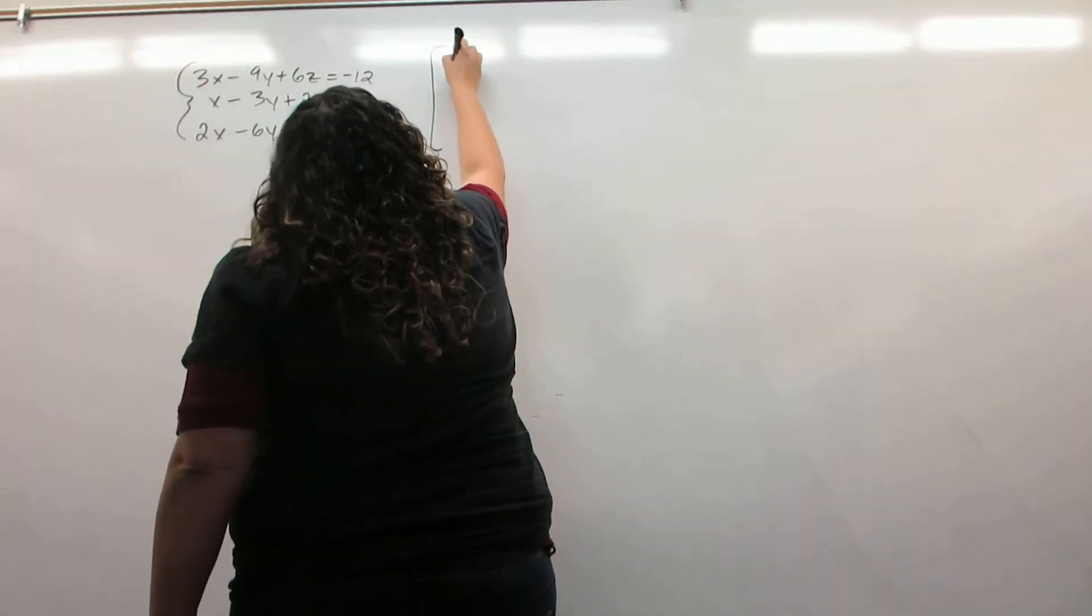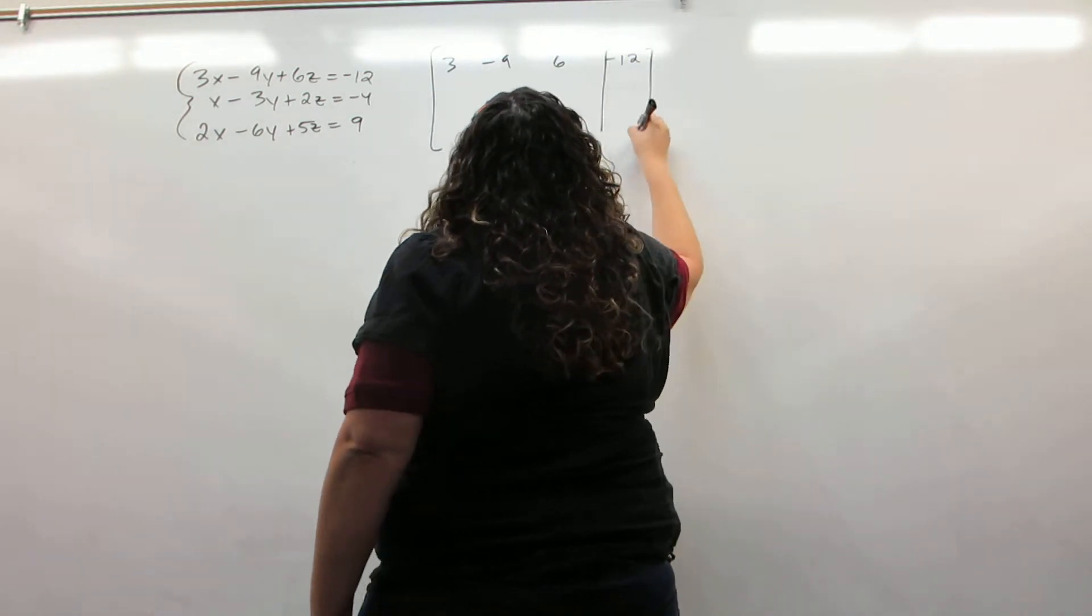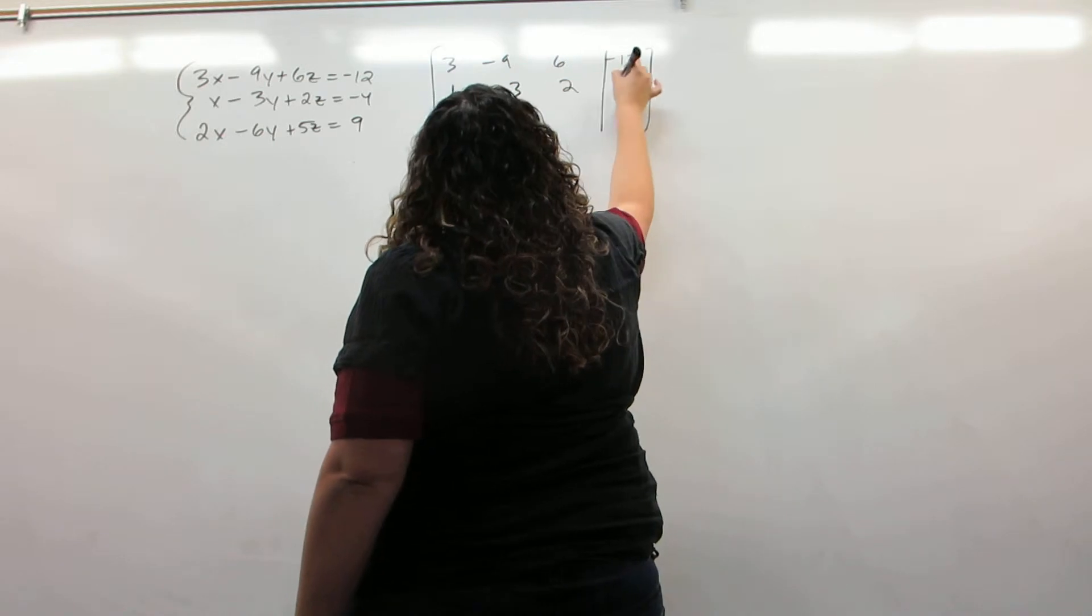The first step is to turn it into a matrix by writing the coefficients of each equation as a row of the matrix.